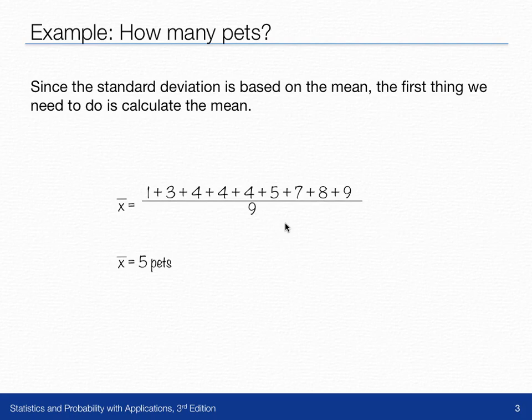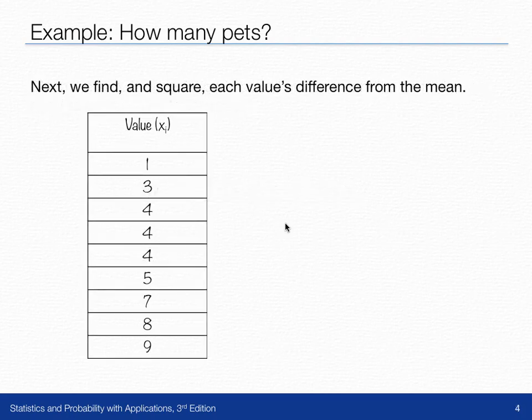The next thing we're going to do is make a table with all the values in it. We're going to find and square how different each of these values is from that mean of five pets.